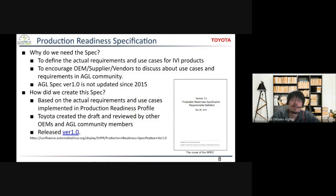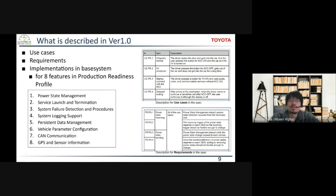When creating this spec, we described requirements and use cases implemented in the production readiness profile, meaning these requirements and use cases are based on actual products. Toyota created the initial draft version of this spec, and it was reviewed by other AGL members including OEMs. For this year, we released version 1.0, which covers the functionality of base systems. The main contents of production readiness spec 1.0 are use cases, requirements, and the corresponding implementation in the base system. From the production readiness profile, we describe eight topics.